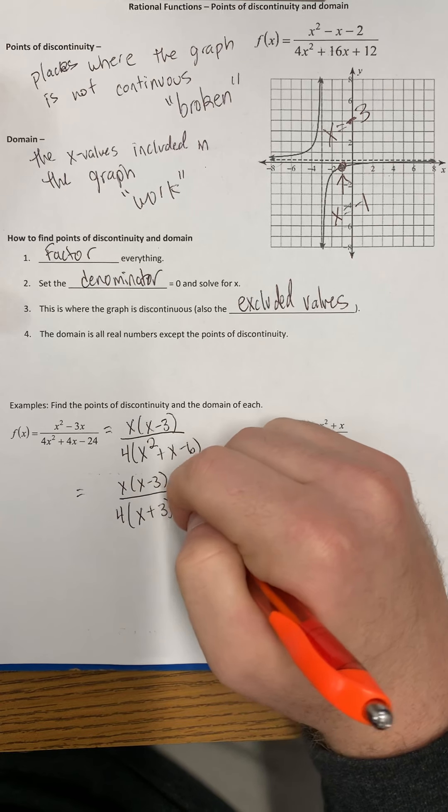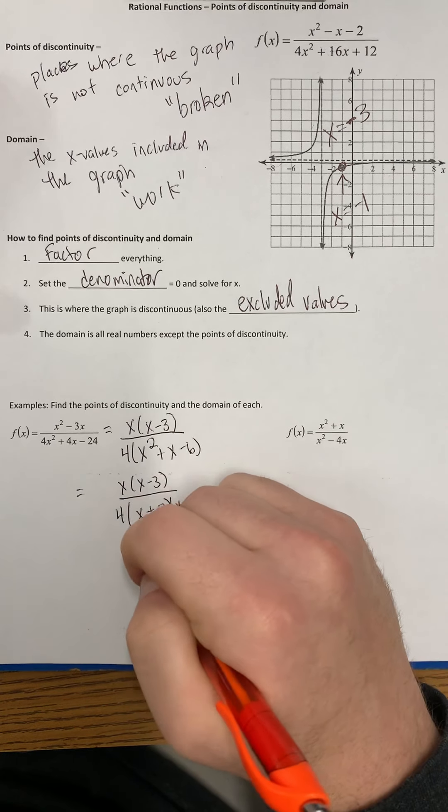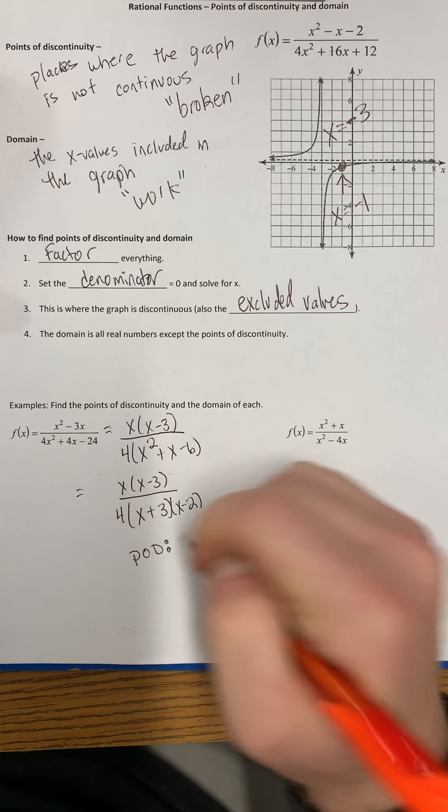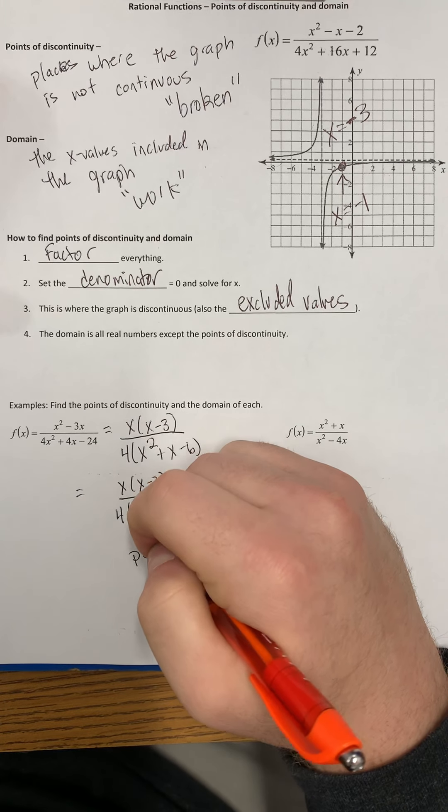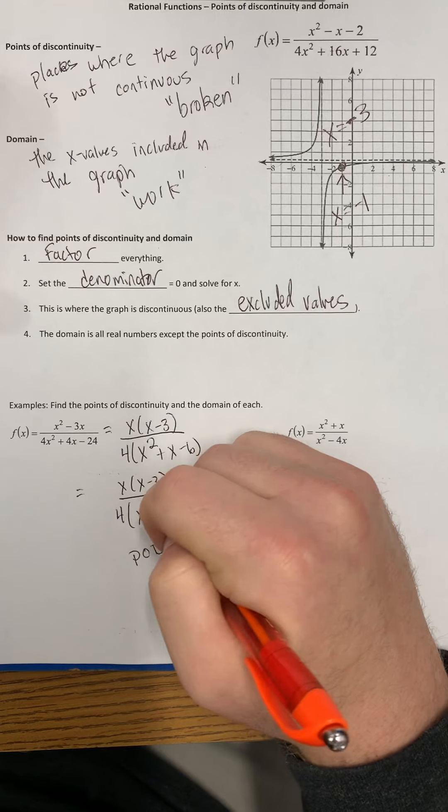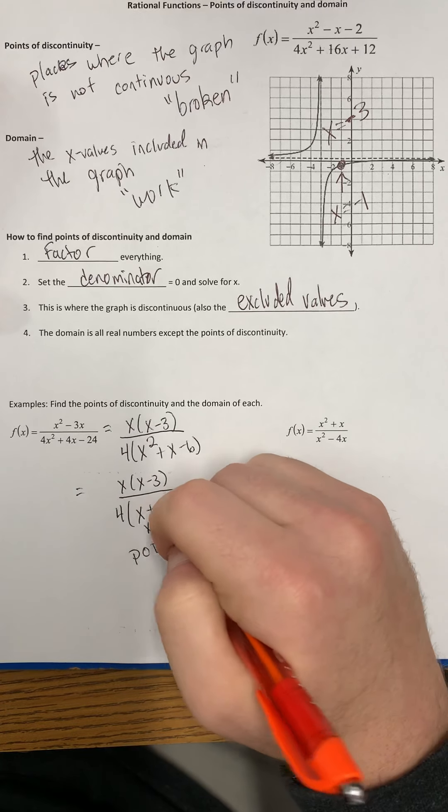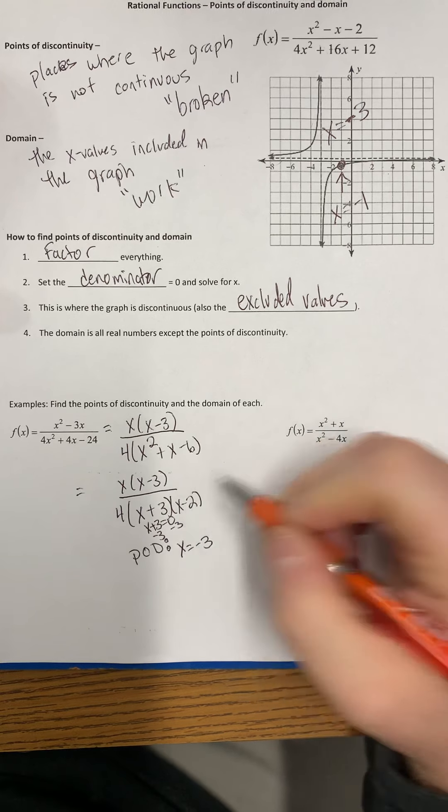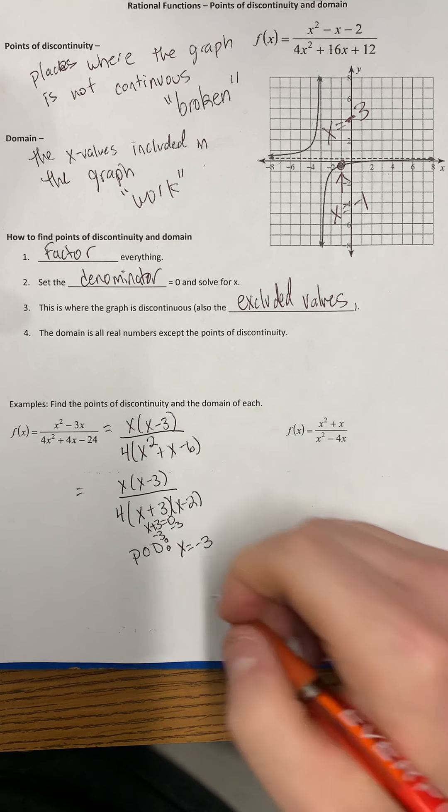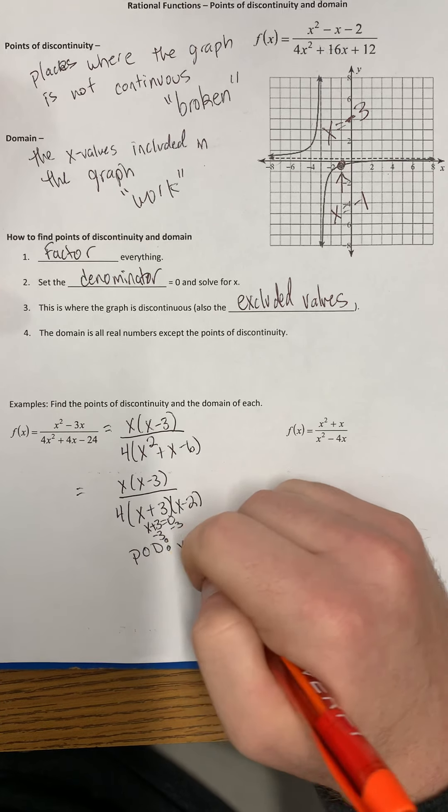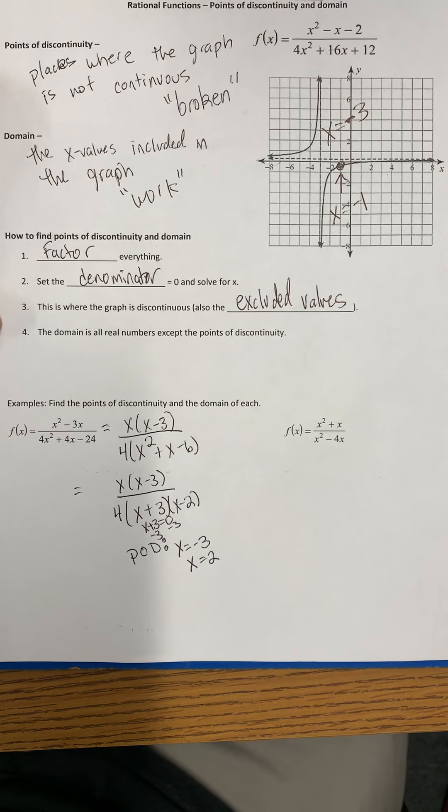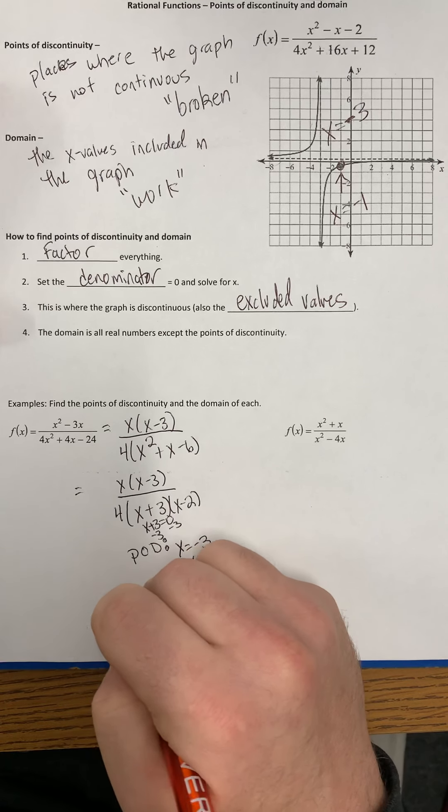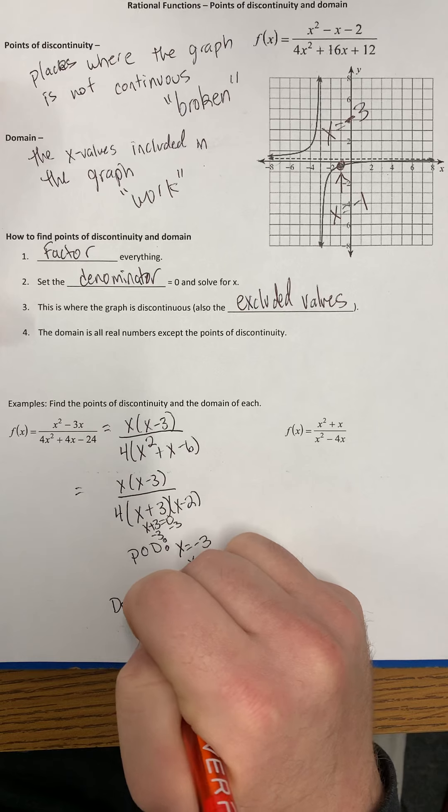So our points of discontinuity—I'm going to abbreviate those POD—we set x plus 3 equal to 0, we solve for x, we subtract 3 from both sides, we get x equals negative 3. We would do the same thing for x minus 2. We would set it equal to 0, we would add 2 to both sides, so we get x equals 2.